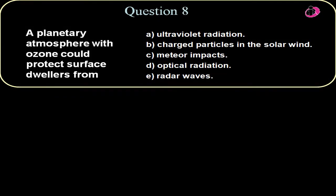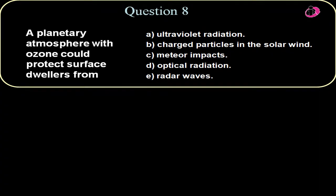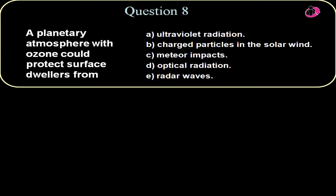Question number eight, a planetary atmosphere with ozone could protect surface dwellers from? Ozone has the effect of absorbing UV radiation, ultraviolet radiation and protect the dwellers from that high energy electromagnetic radiation. So that's what it protects us from and it's a good thing. So that is ultraviolet radiation.